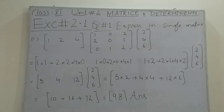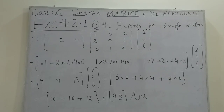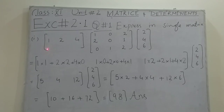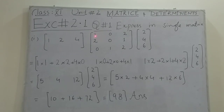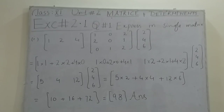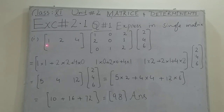To multiply two matrices, we check that the number of columns of the first matrix should be equal to the number of rows of the second matrix. Here the number of columns for the first matrix are three: one, two, three. And the number of rows for the second matrix are also three: first row, second row, third row. So multiplication is confirmed and we can proceed.